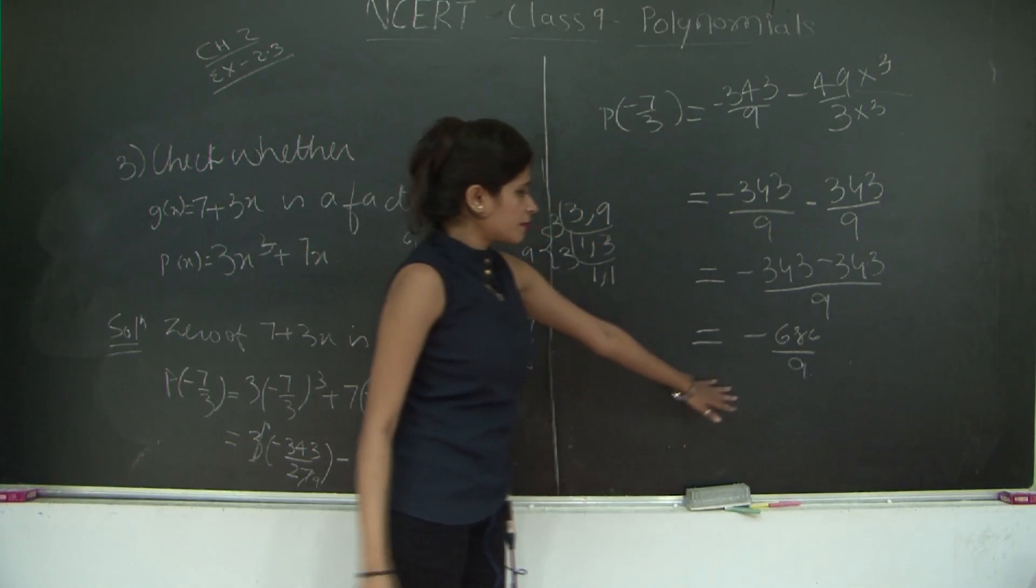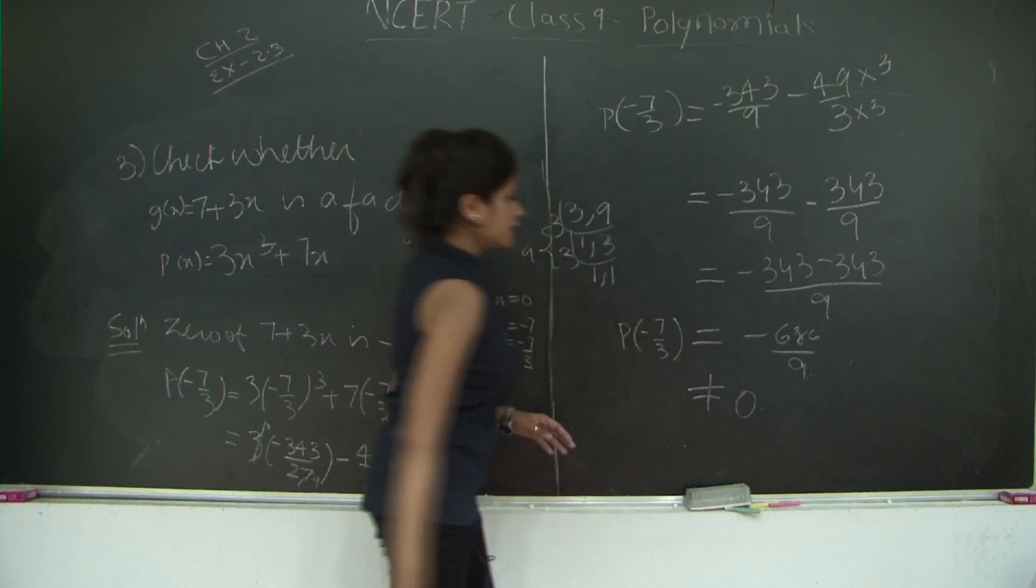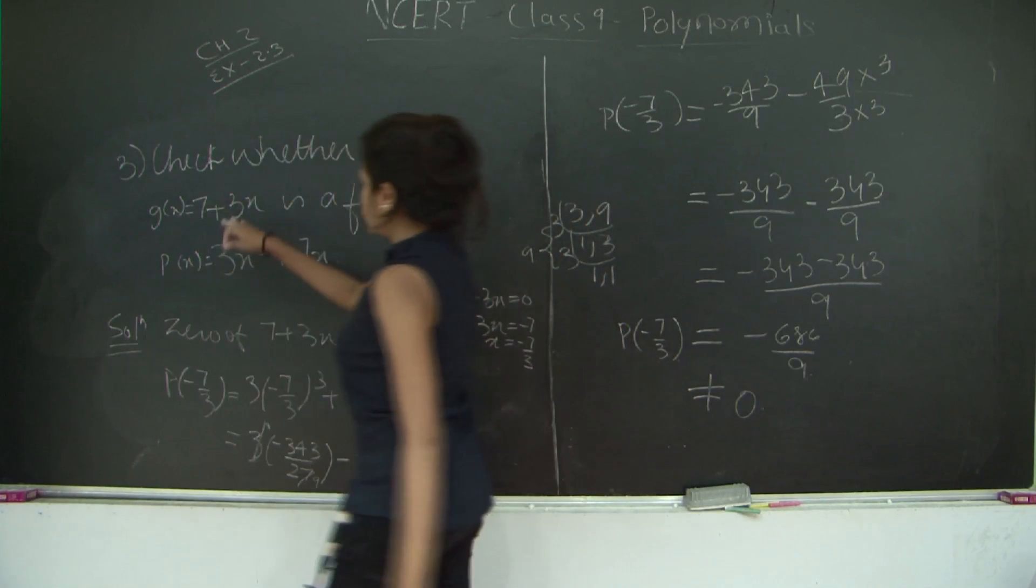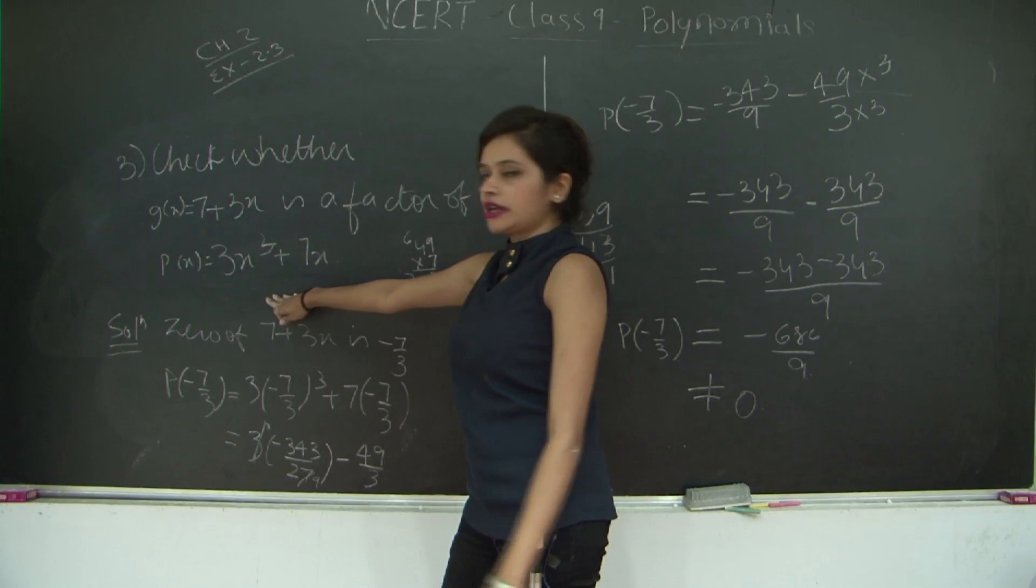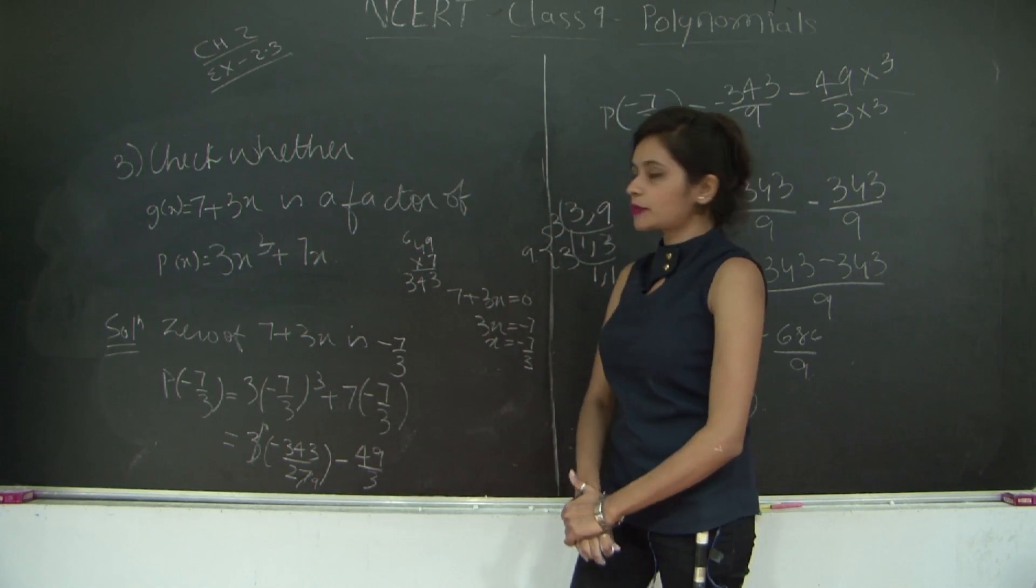Now this is your remainder that is p of minus 7 upon 3. This is not equal to 0. Right? Therefore g(x) is not a factor of p(x). So with this we wind up exercise 2.3 of chapter polynomials.